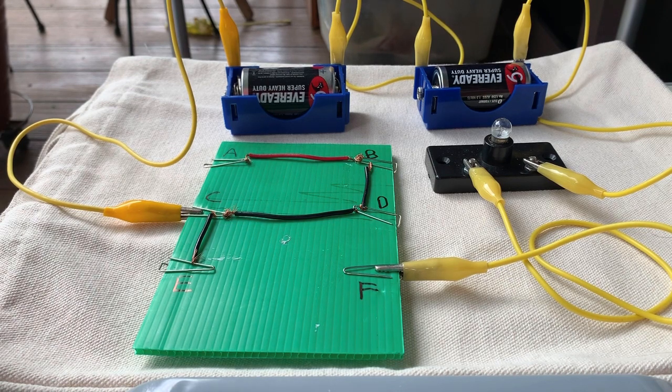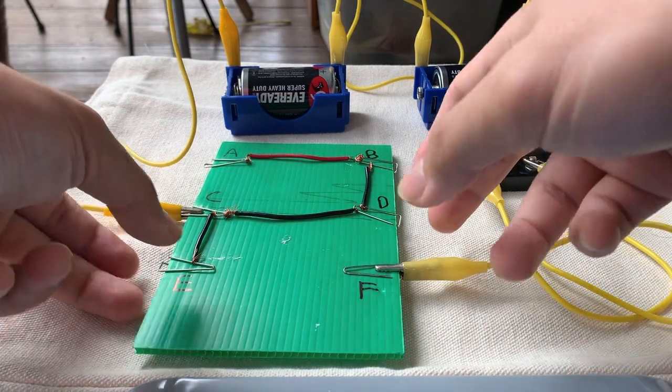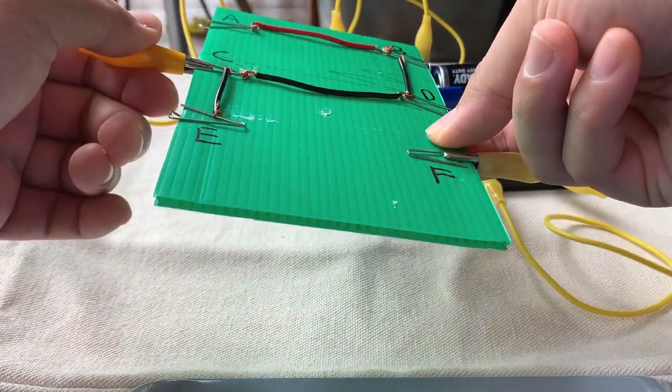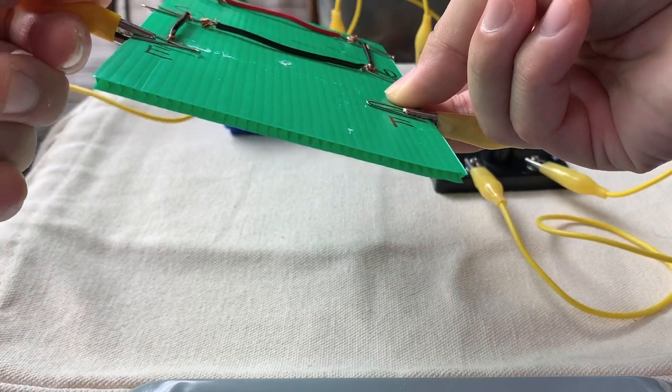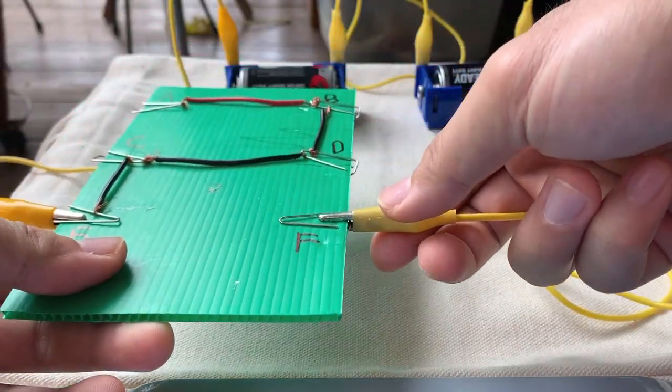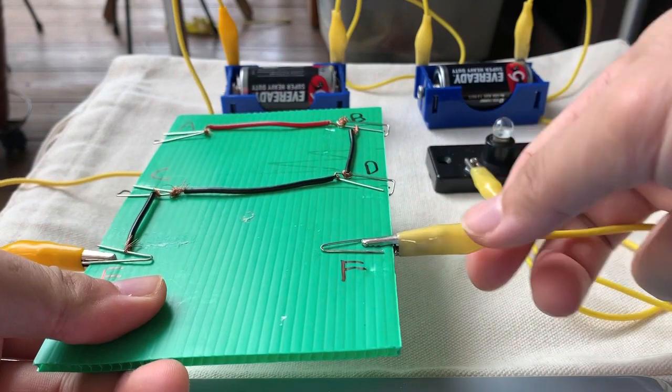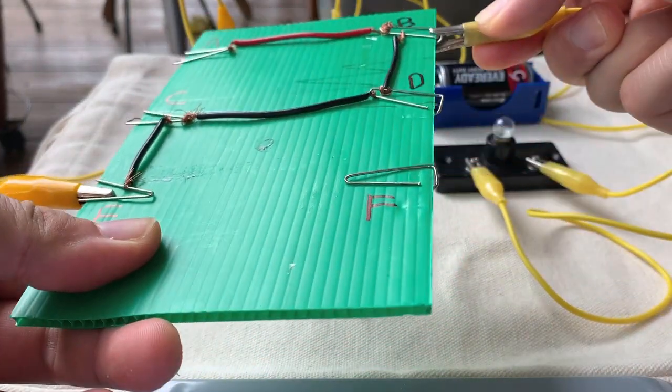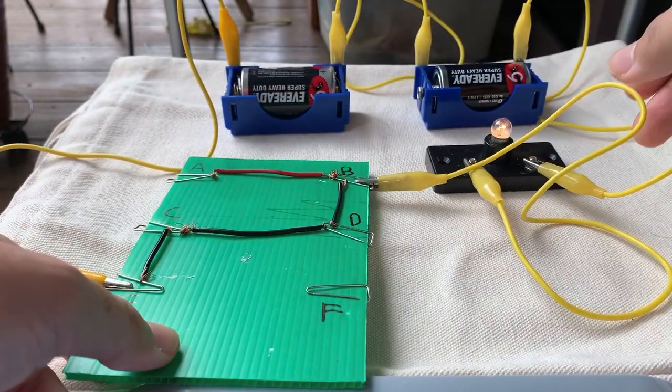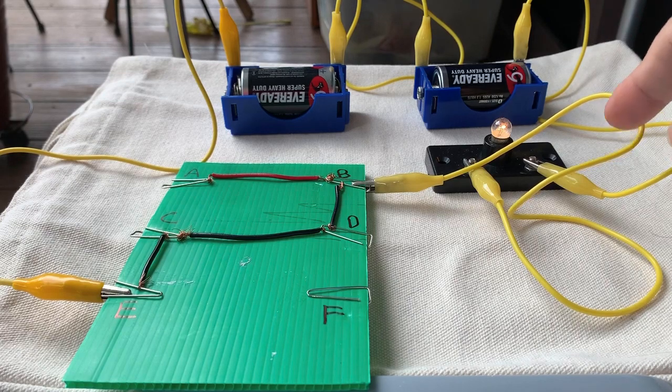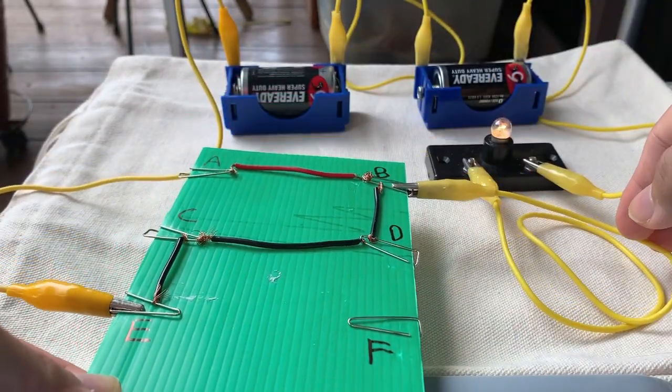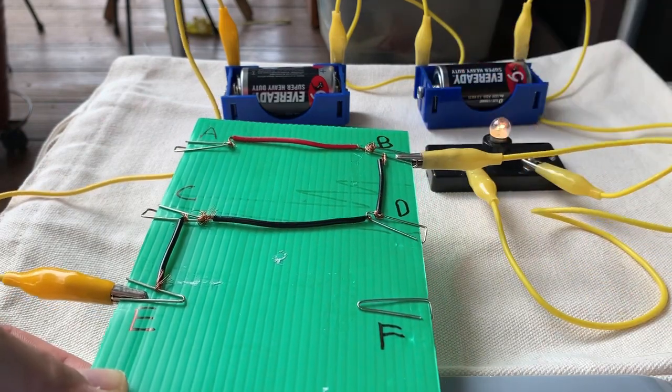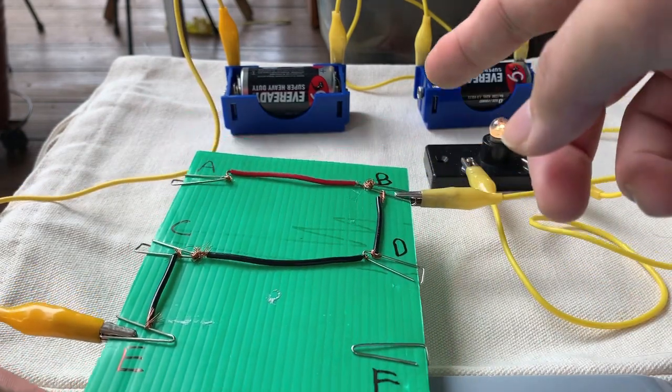Now let's take a look at B and E. I'll clip over here E and B. Will it light up? Let's find out. It lights up. If you notice, B and E are not connected directly with one wire, but indirectly they are connected.